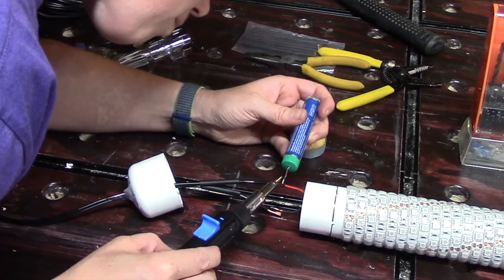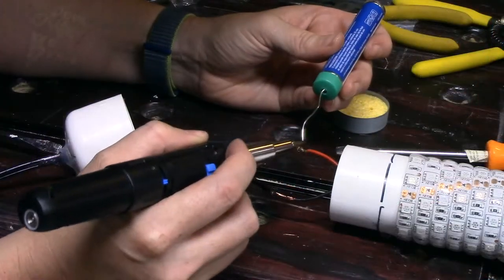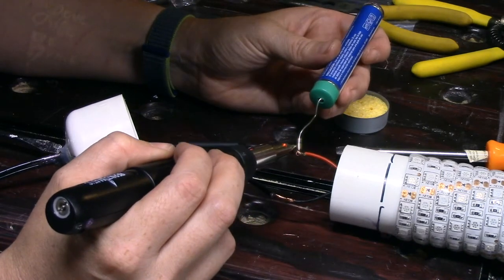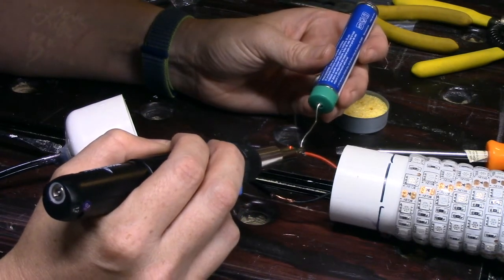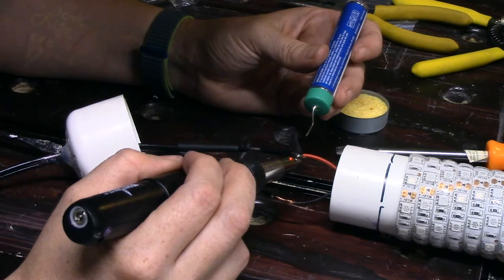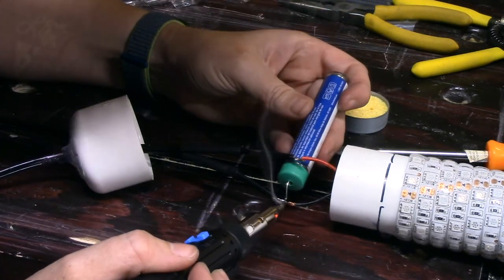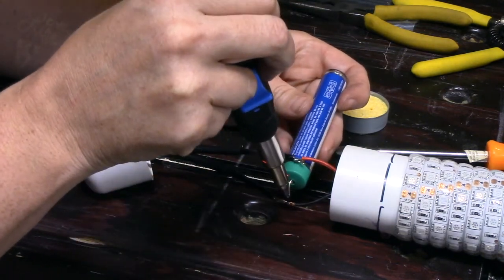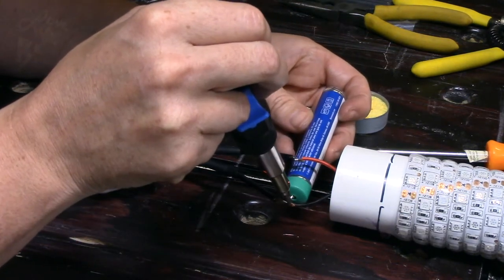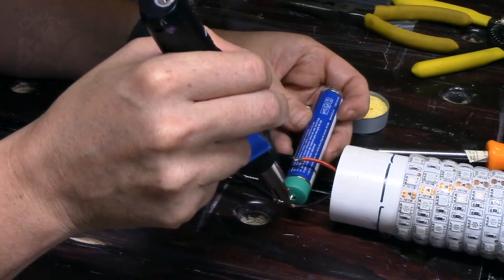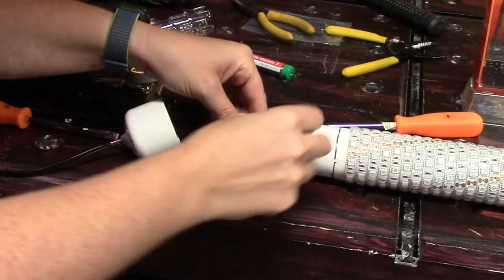For those that are not familiar with soldering, the soldering iron is basically a heat source that is melting the electrical solder over the wires and then it will cool down and dry hard. Kind of like wax on a candle, when it is heated it melts and then as it cools it hardens. Don't be scared to try this technique. This is honestly my first time soldering ever.